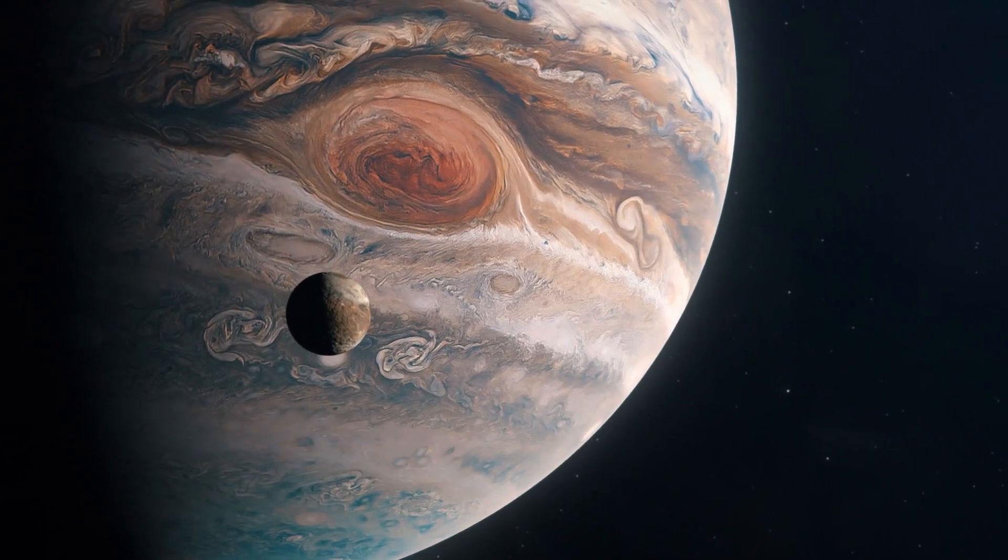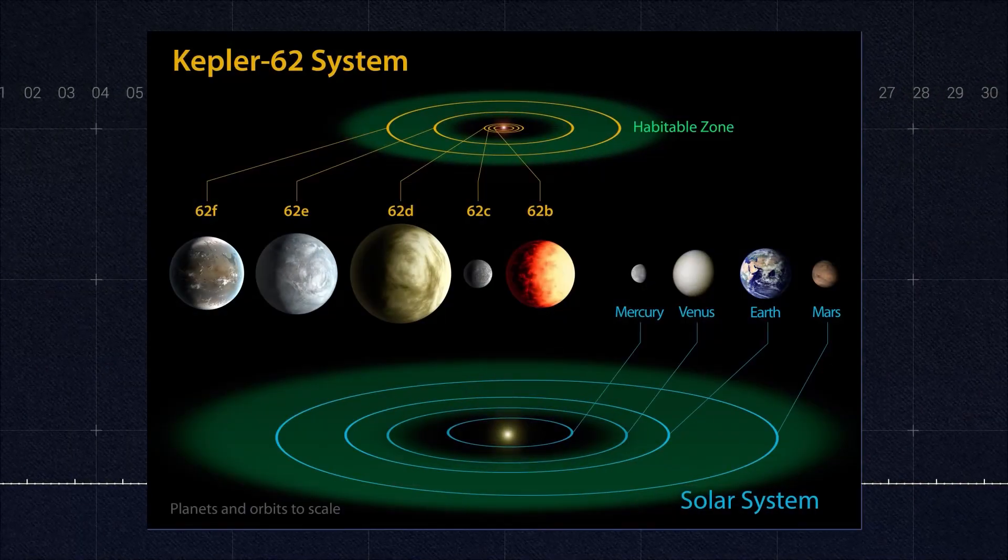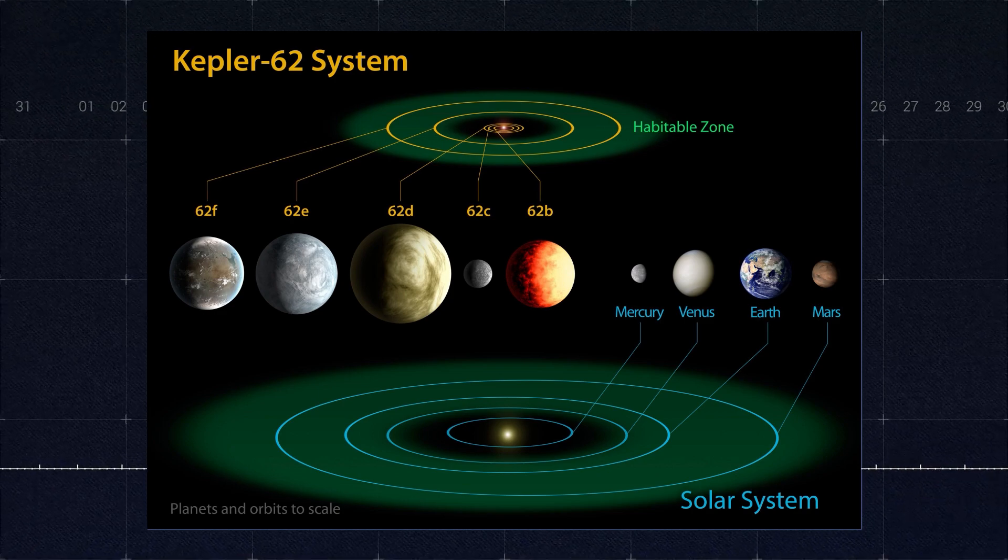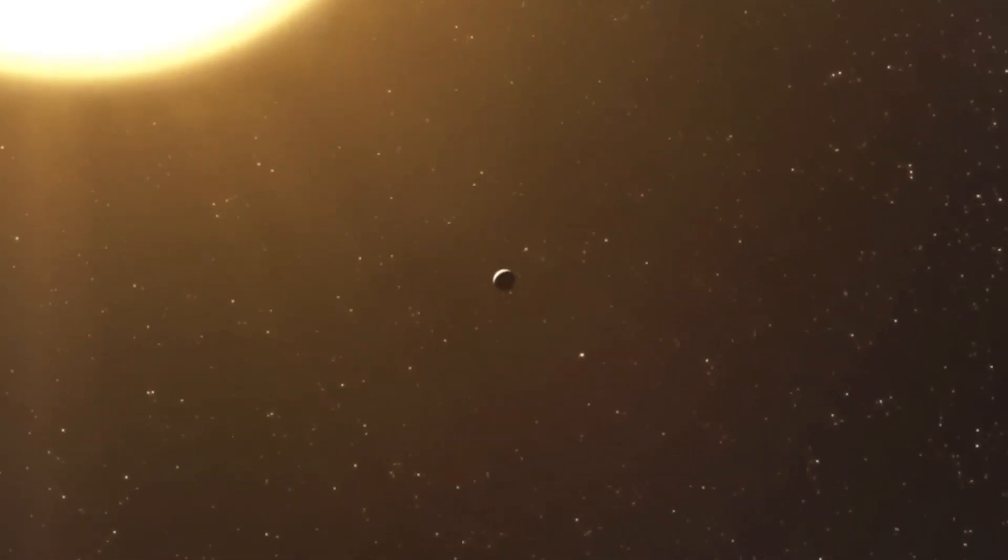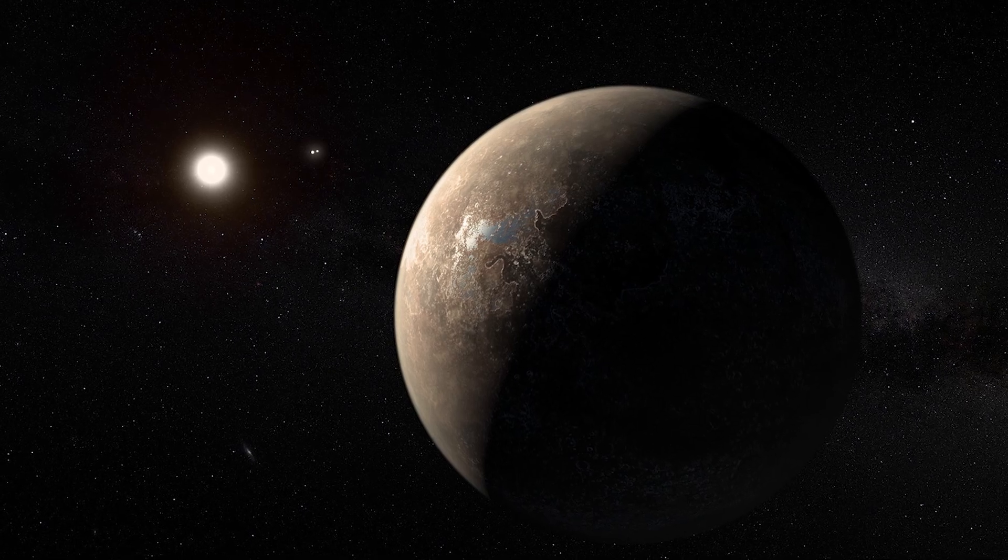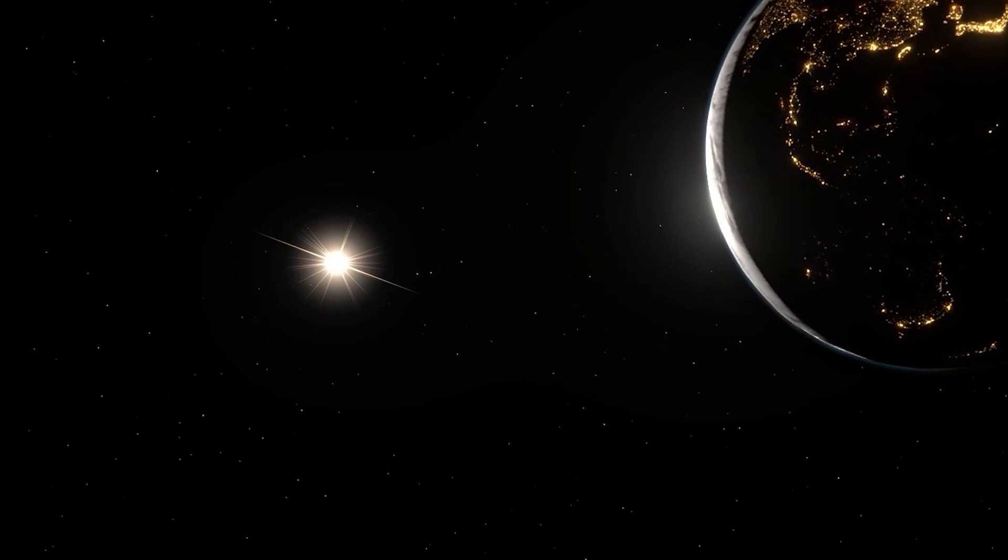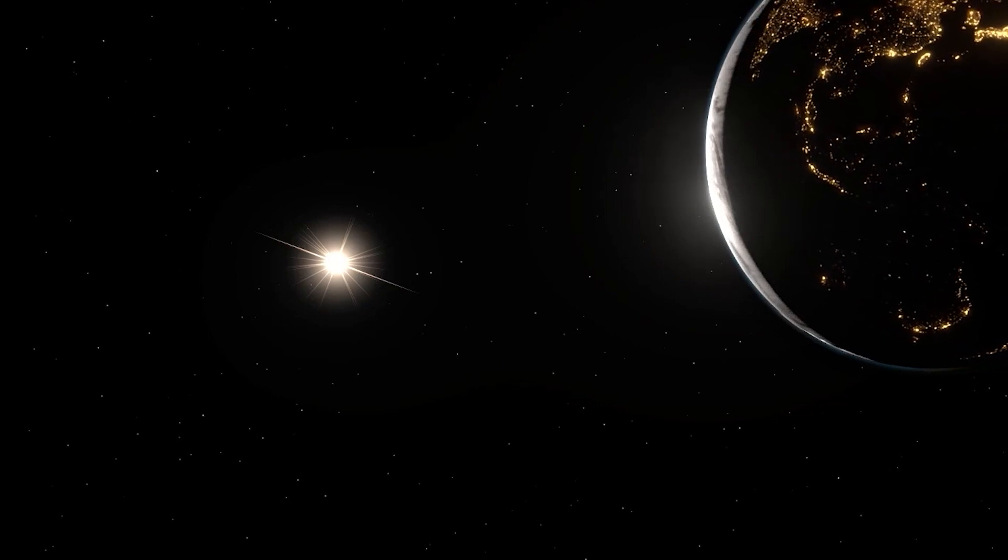However, because the star is so tiny, the habitable zone is so near to it that the planet is tidally locked, with one side always facing the star. There is another hypothesis that life could not arise on the day side owing to the host star's steady stream of strong radiation.